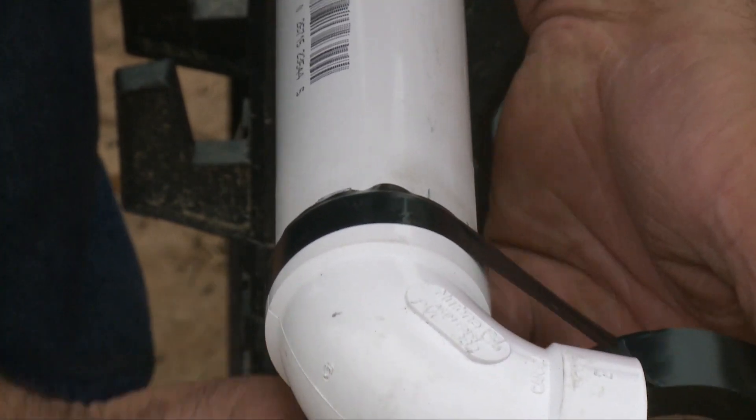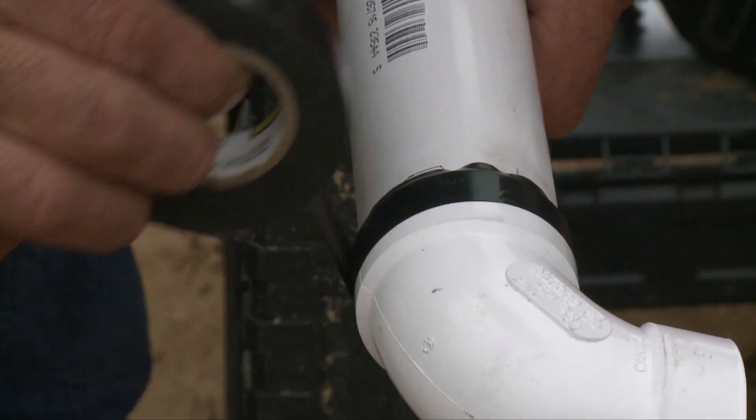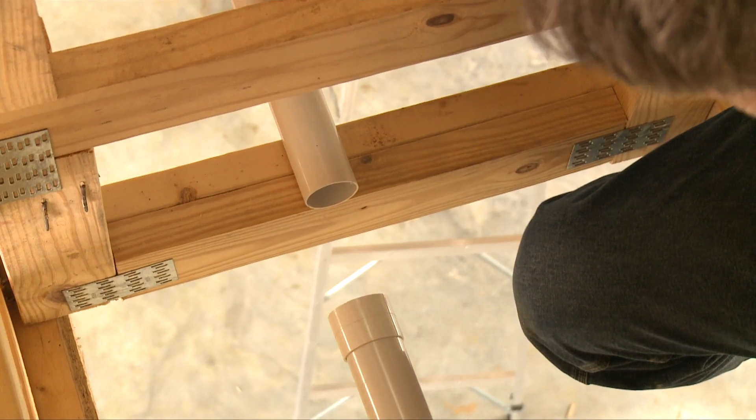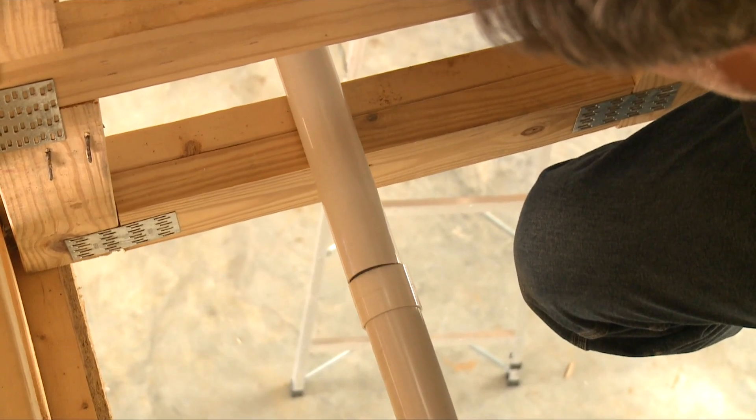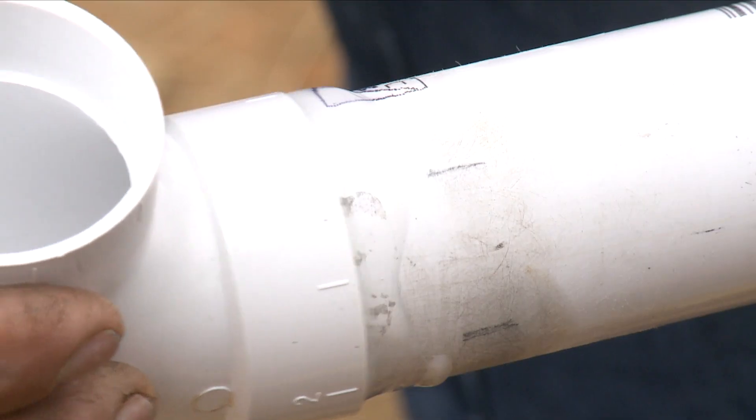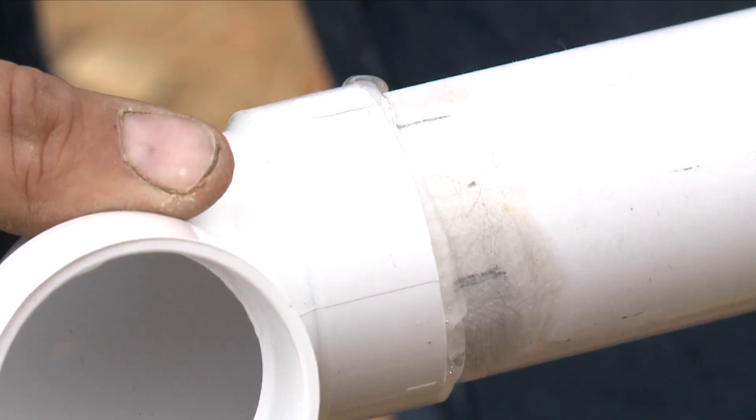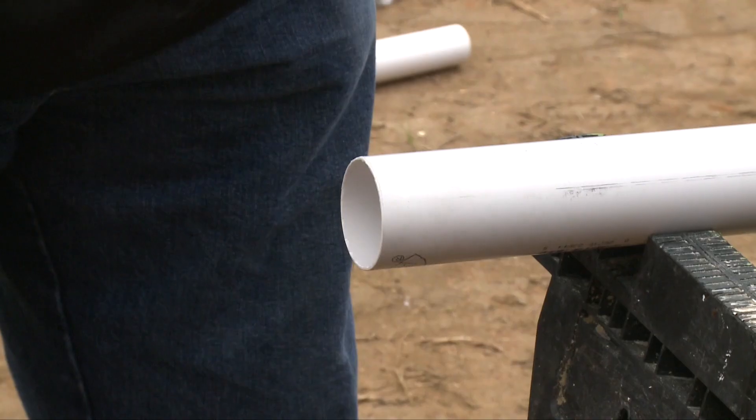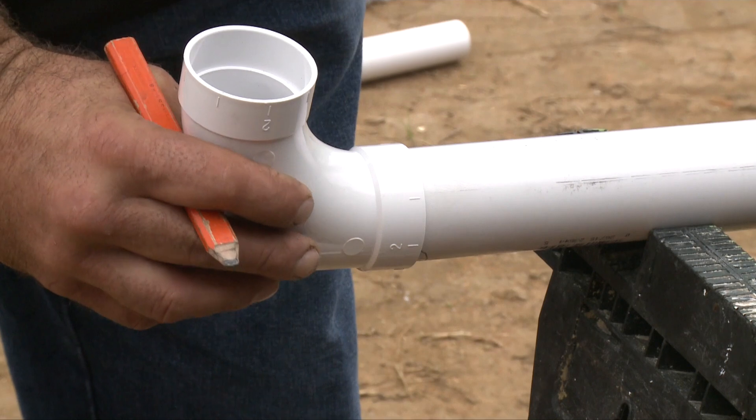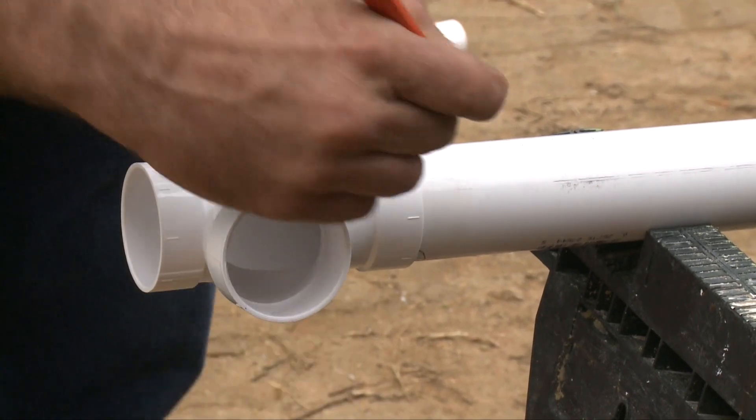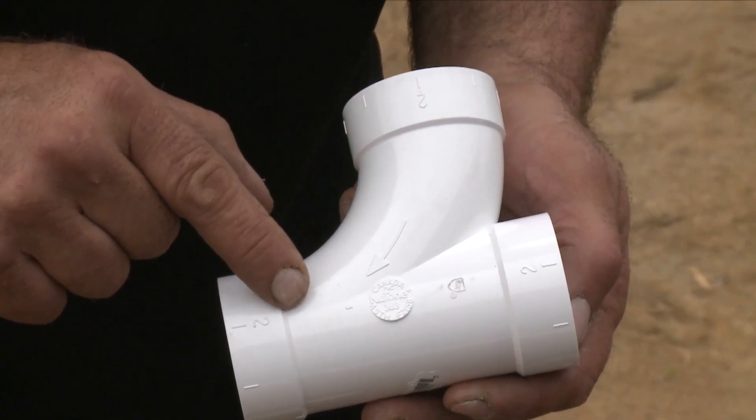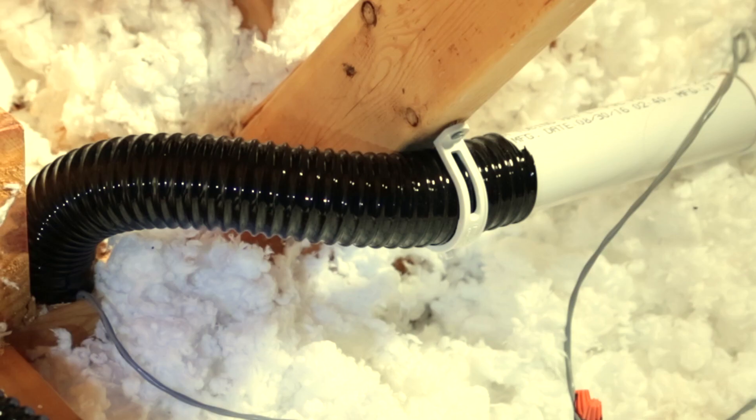Attach a sweep fitting to the other end of the branch line, facing the direction that the main trunk line will run. Once you've completed the branch lines, start the trunk line at the sweep fitting of the farthest branch line from the power unit. Join lengths of straight PVC piping using stop couplings until you reach the next branch line. Connect the branch lines and trunk line together by fitting one end of a small piece of piping to the sweep fitting and the other end to a tee that also attaches to your trunk line. The type of tee you will use will depend on the configuration of your install. Always make sure the tee connects with the airflow going toward the power unit.